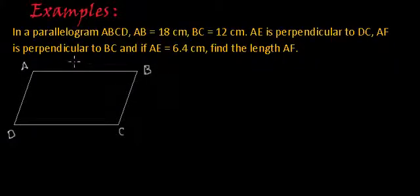So AB, this is 18 centimeters. And BC is 12 centimeters. AE is perpendicular to DC. So if I draw a perpendicular from point A to line DC, this will be point E.